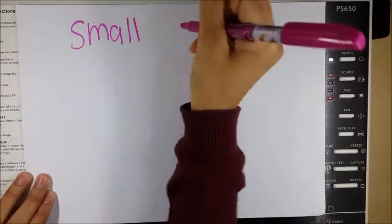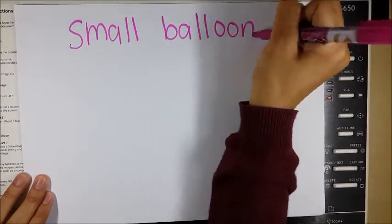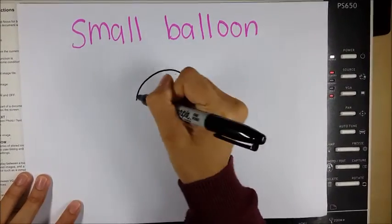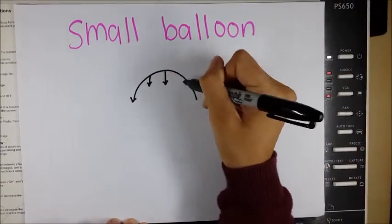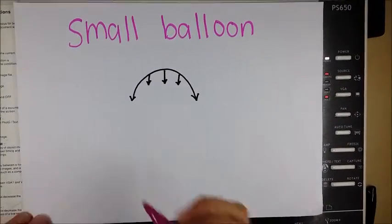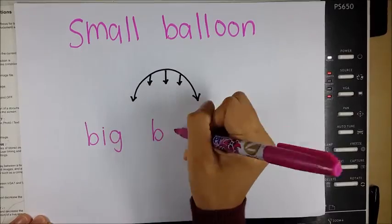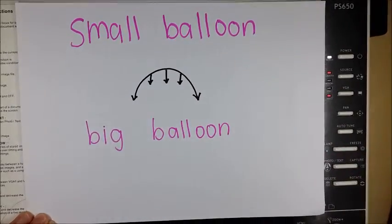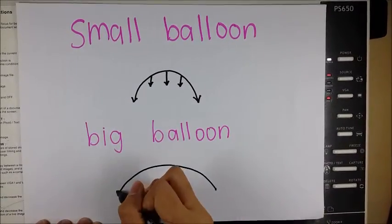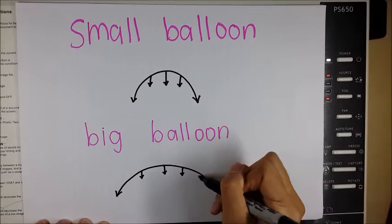The shape of the balloon also influences the pressure. As the small balloon is more curved, it exerts more tension which increases the pressure of the gas in the small balloon. For a balloon which is less curved, such as the big balloon, the tension exerted inwards is less, and thus the pressure is also less.